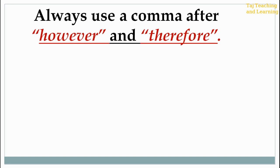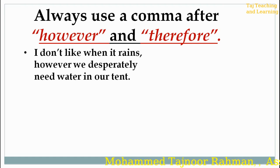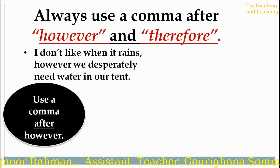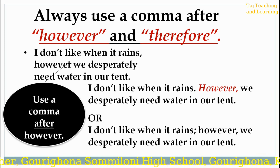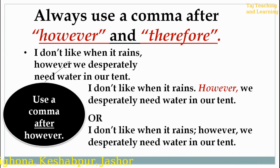Always use a comma after 'however' and 'therefore.' For example: 'I don't like when it rains. However, we desperately need water in our tent.' Use a comma after 'however.' So: 'I don't like when it rains. However, we desperately need water in our tent.'